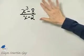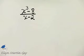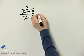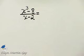Let's simplify or write this rational expression in lowest terms. Now remember to do that we look for common factors. The only way we can find common factors is if we completely factor the numerator and completely factor the denominator.